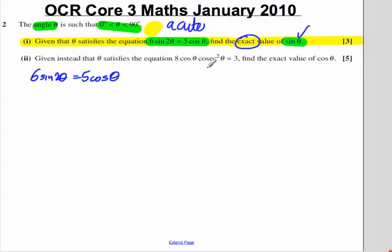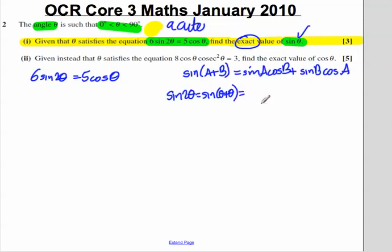Can we replace sine 2 theta by any identity we know? Well, yes, we can. Now, I want to show you where this sine 2 theta identity comes from. In the exam and in the formula booklet, you'll be told and you'll be given this formula that sine a plus b is equal to sine a cos b plus sine b cos a. You'll be given that formula, so there's no need to remember it. Now, if I said to you what's sine 2 theta or sine theta plus theta, simply substitute theta in for a and b here. Then you get sine theta cos theta plus sine theta cos theta, which is simply 2 sine theta cos theta.